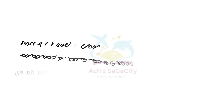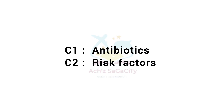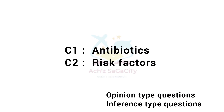First, about the Reading Module Part A. The first set was about ulcers. Paragraph A included the definition and stages, Paragraph B was about prevention, Paragraph C was management, and Paragraph D was about the types of dressing and materials used for dressing. C1 and C2 included questions related to antibiotics and risk factors.